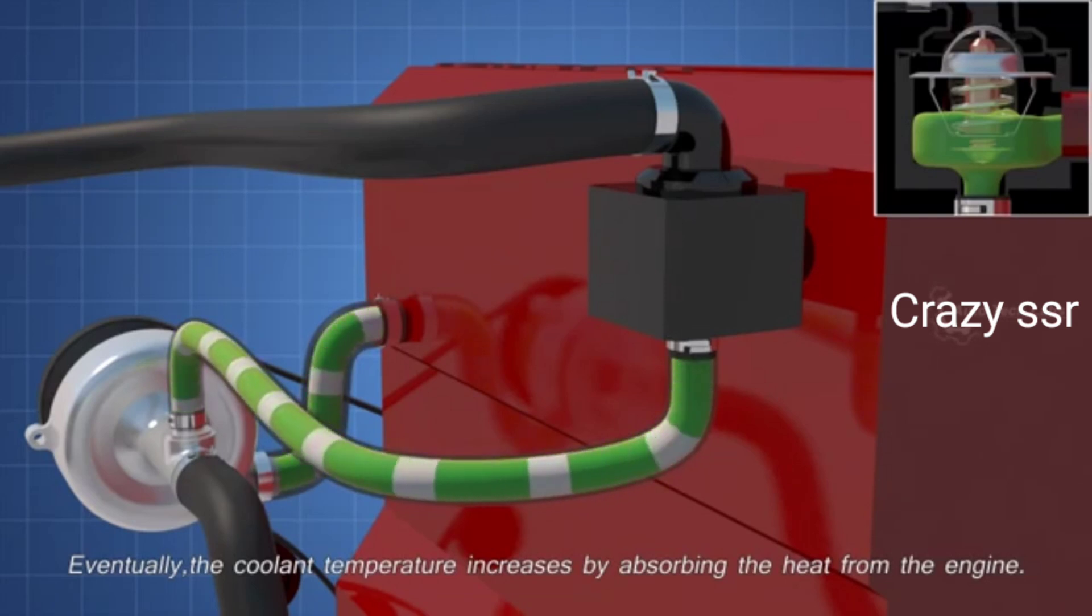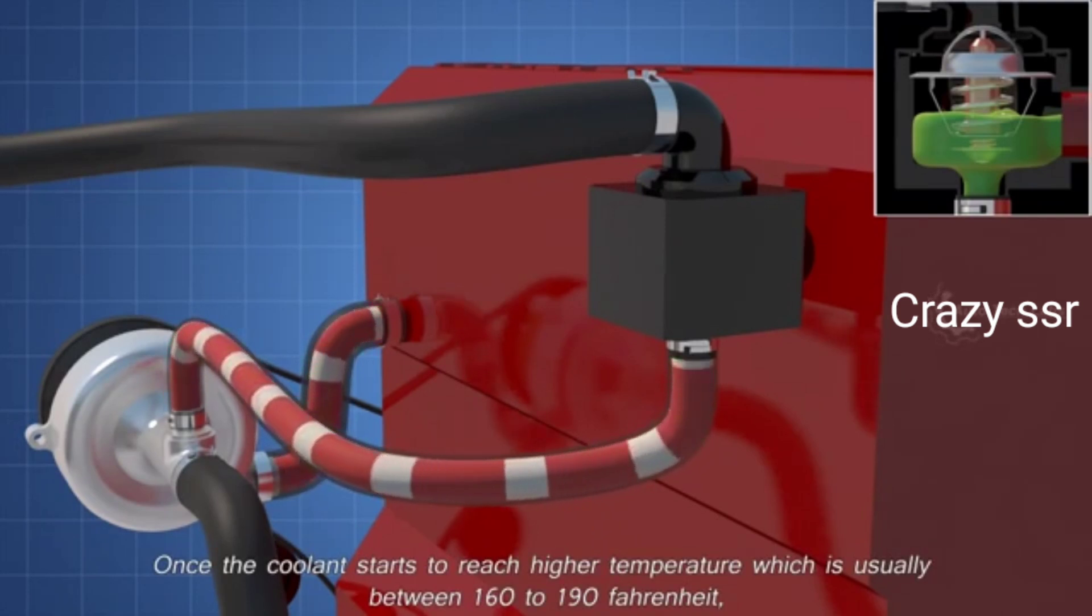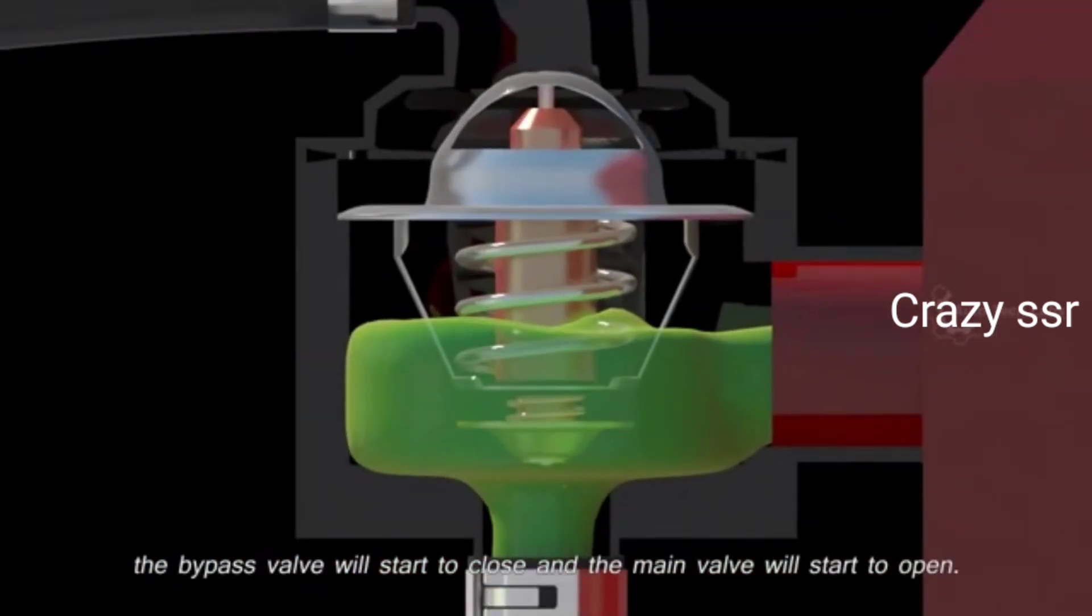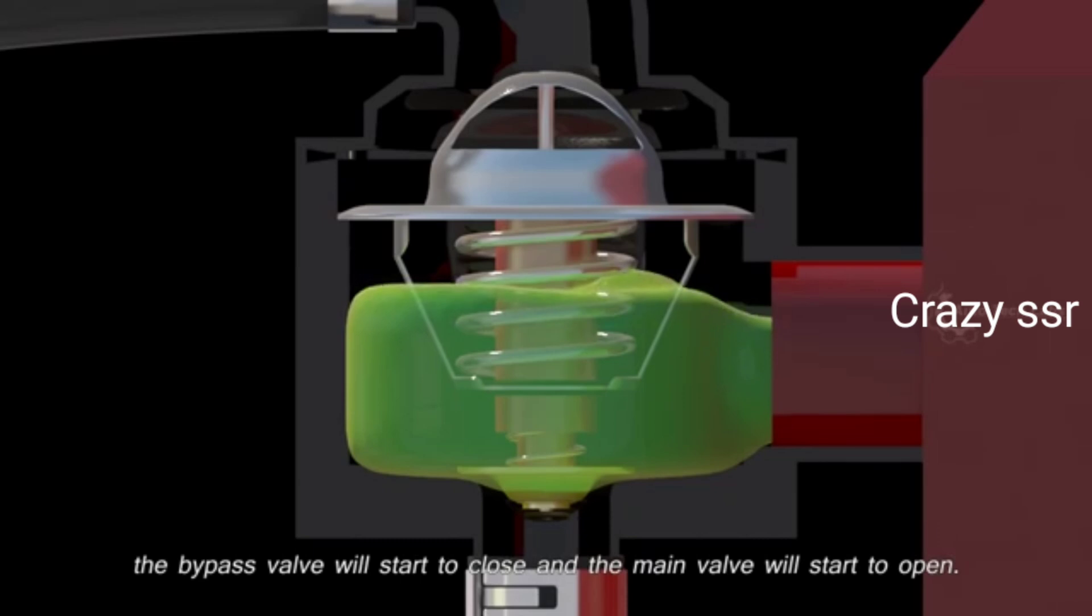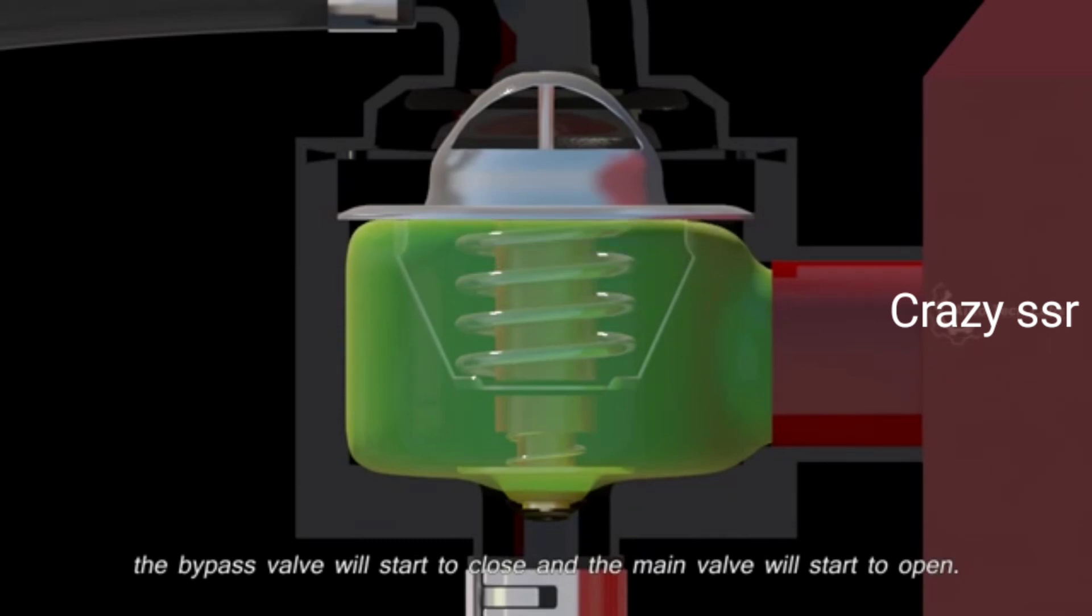Eventually, the coolant temperature increases by absorbing the heat from the engine. Once the coolant starts to reach higher temperature, which is usually between 160 to 190 Fahrenheit, the bypass valve will start to close and the main valve will start to open.